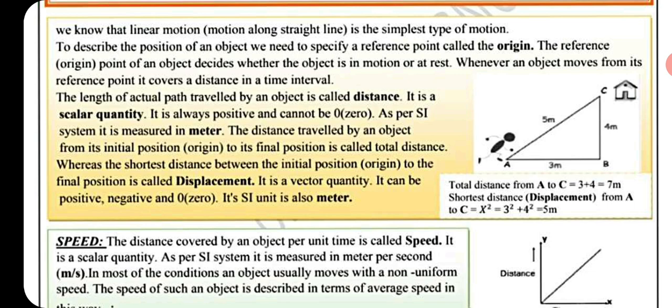Whenever an object moves from its reference point, it covers a distance in a time interval. The length of the actual path traveled by an object is called distance. It is a scalar quantity, it is always positive and cannot be zero. As per the SI system, it is measured in meters. The distance traveled from the initial point to the final position is called total distance.